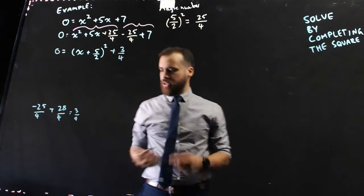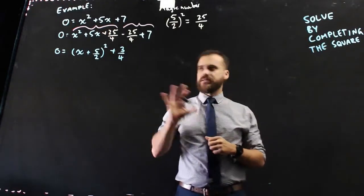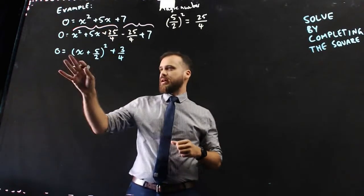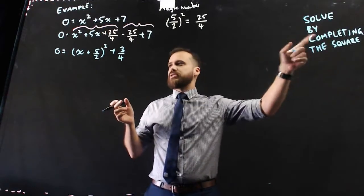Alright, so now I know that 0 equals x plus 5 over 2 squared plus 3 over 4. So, now that I have it, I've completed the square, that's the first part of it, now we just need to solve it.